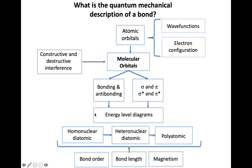Molecular orbital theory is the other quantum mechanical description we're interested in using. We begin with atomic orbitals, considering their wave functions and electron configurations, then combine that with the idea of constructive and destructive interference to arrive at molecular orbitals. Notice we are not going through a hybridization stage — we're taking the atomic orbitals and constructing something new: orbitals that are a description for the molecule itself.